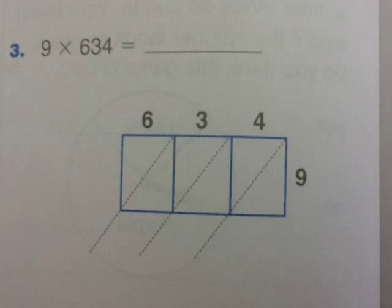Let's look at one now that has 3 digits. So here we have 9 times 634. First, we have 4 times 9, so think about what that is. This is 36.